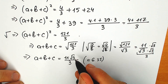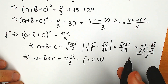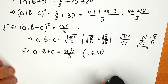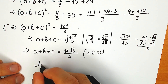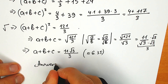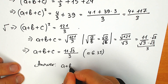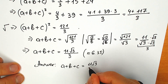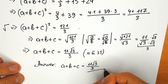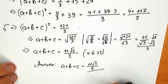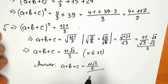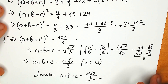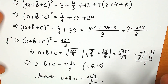This is our final answer: a plus b plus c equals 11 square root of 3 over 3. I really hope you understand my explanation and learned something new. Now let's go through the steps real quick.